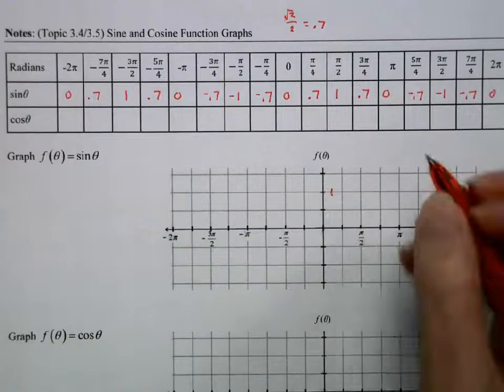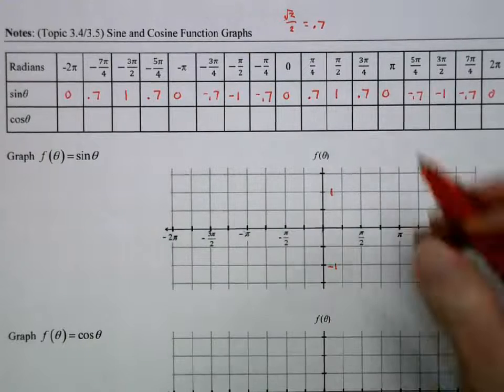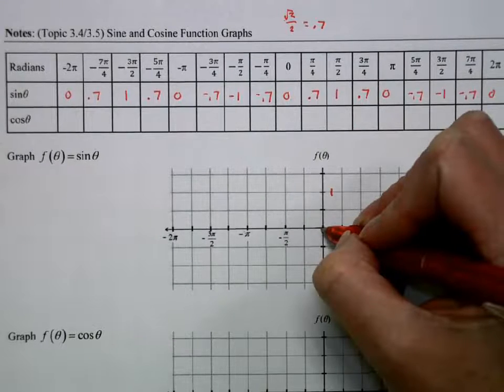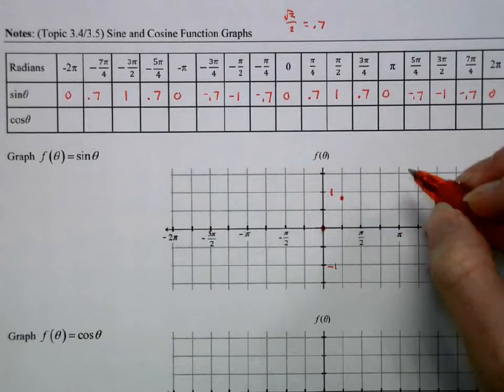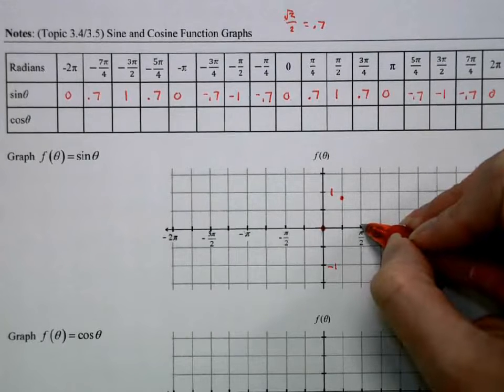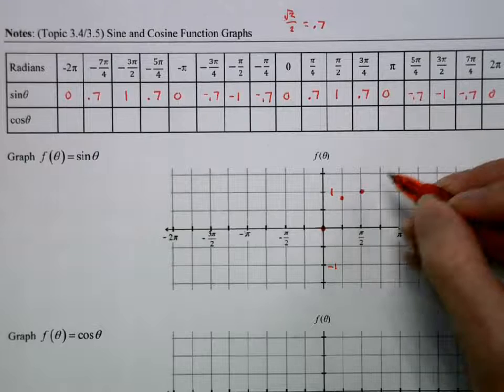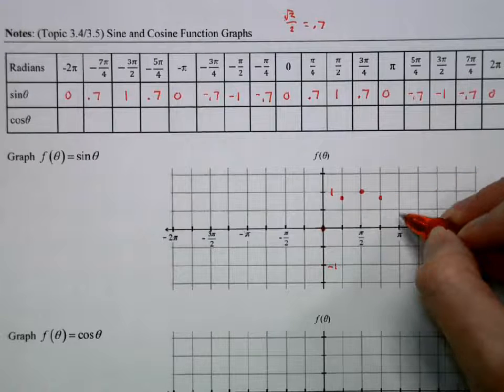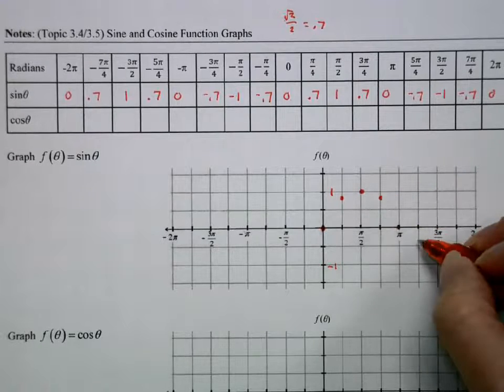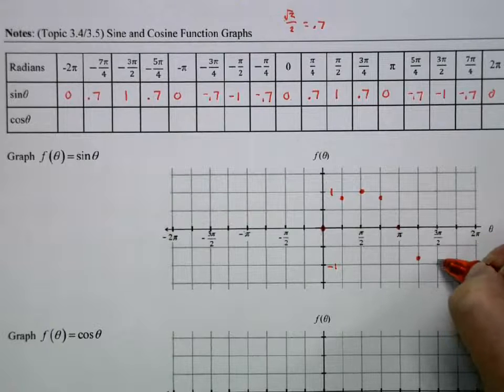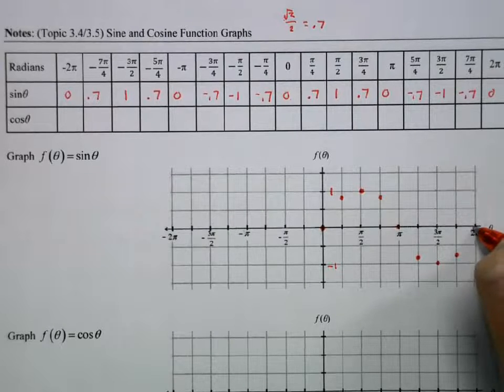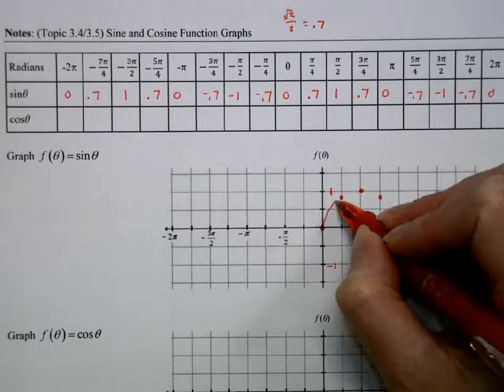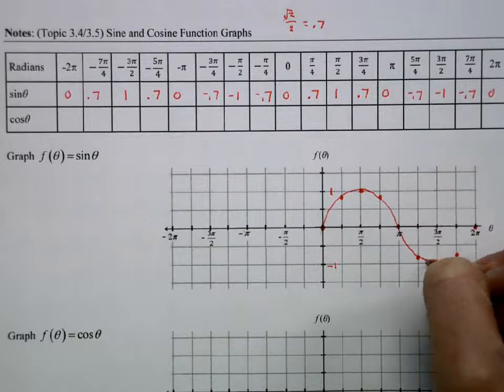So we're going to graph this. Make this 1, make this negative 1. So sine of 0 is 0. Sine of π over 4 is 0.7. Then sine of π over 2 is 0. And then it starts going back down to 0. Then we go to negative 0.7, negative 1, negative 0.7, and so on. So this part of the graph looks like that.